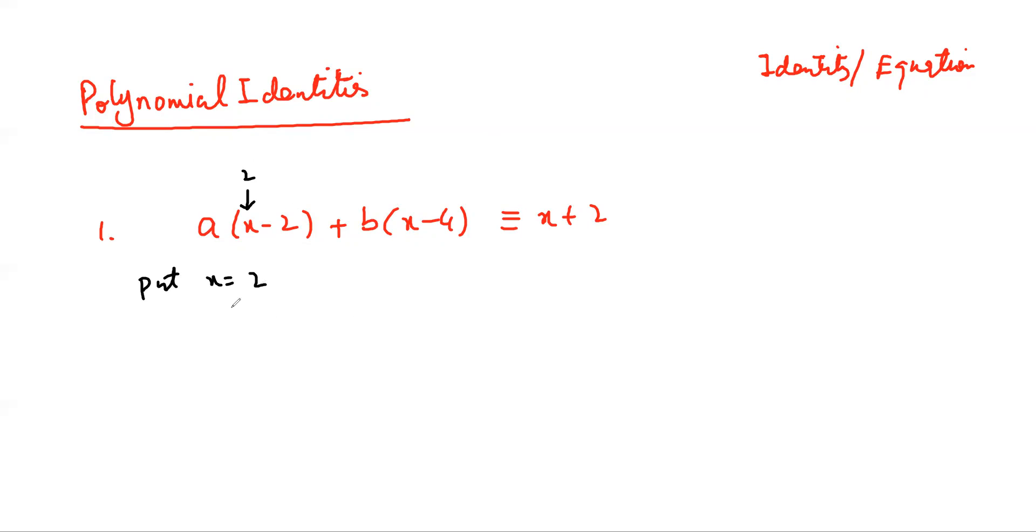So that means this will become A into 0. And this is B into 2 minus 4. And now this is going to be 2 plus 2. Once you have substituted a value into this identity, then this becomes an equation. So this A into 0 is going to be 0. This is B into minus 2. That is equal to 4. So this B is going to be equal to 4 over minus 2, and that is going to be minus 2.